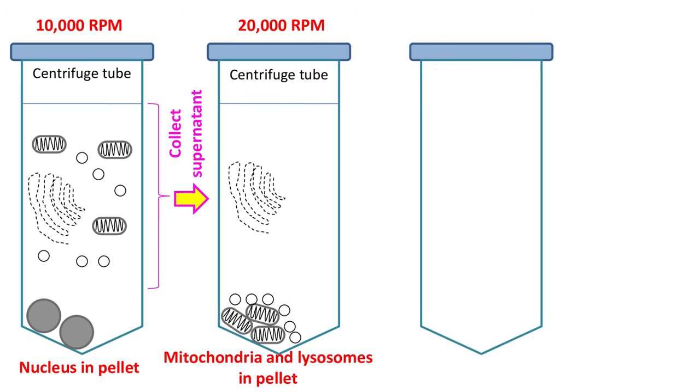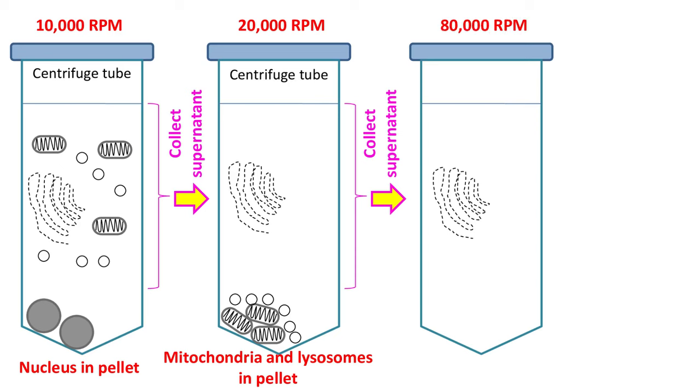The supernatant is again collected in a fresh centrifuge tube and centrifuged at 80,000 rpm. As a result, broken pieces of endoplasmic reticulum, which are also known as microsomes, are obtained in the pellet.